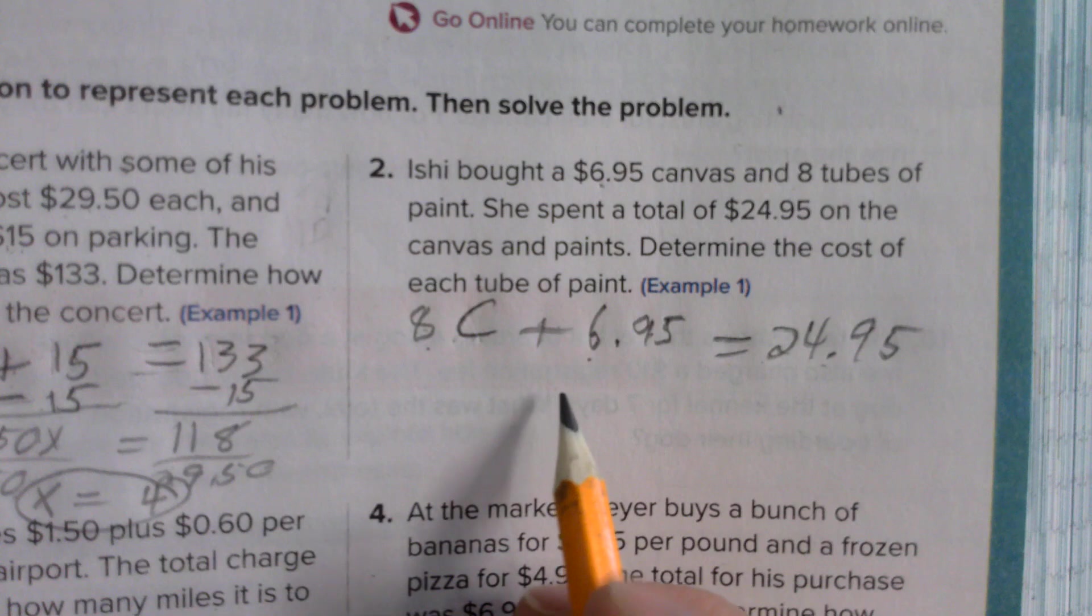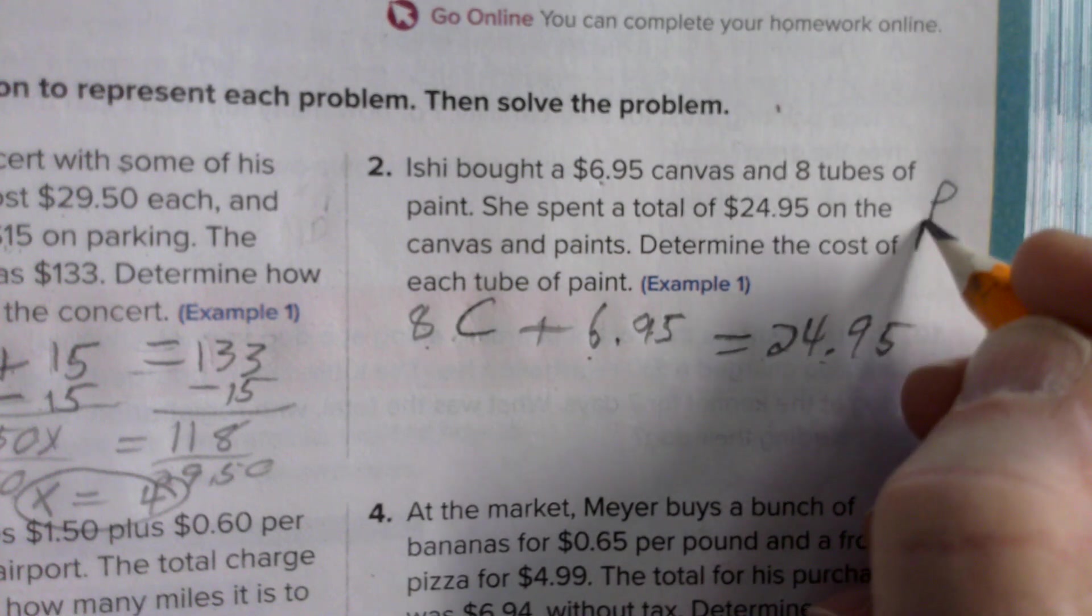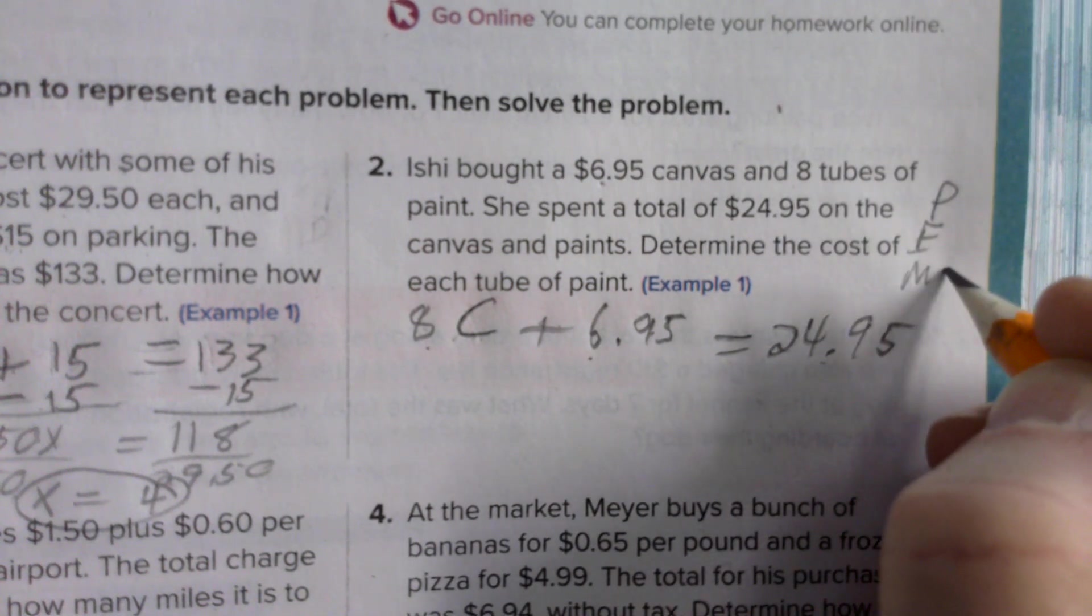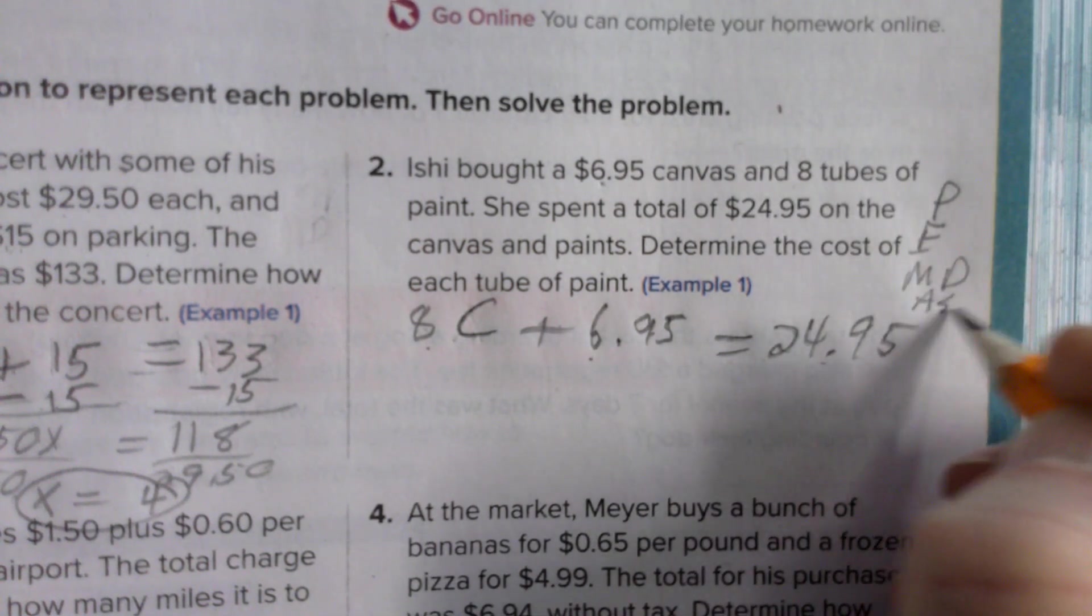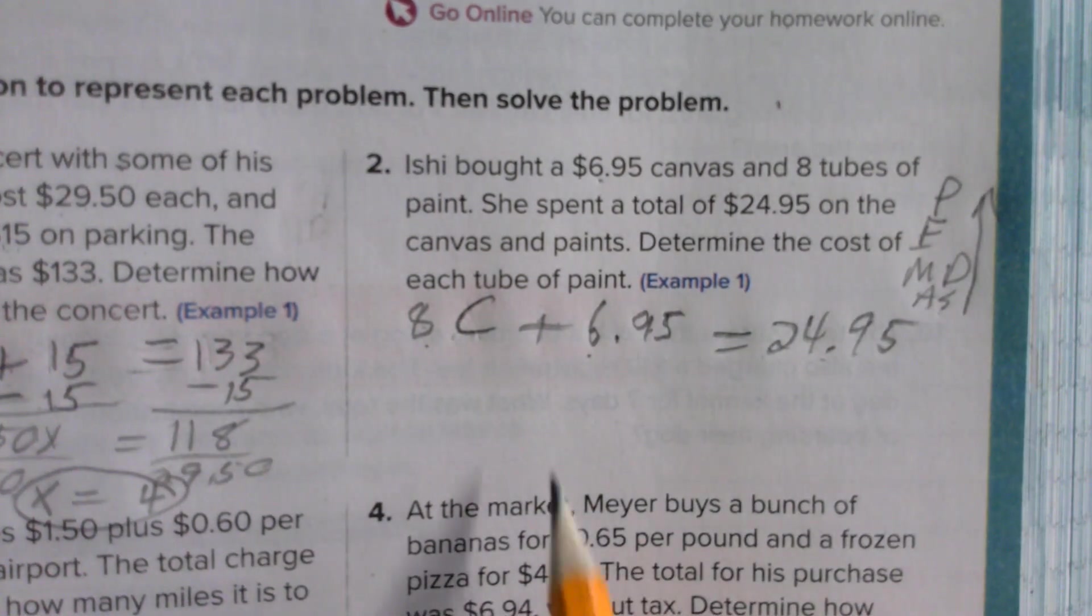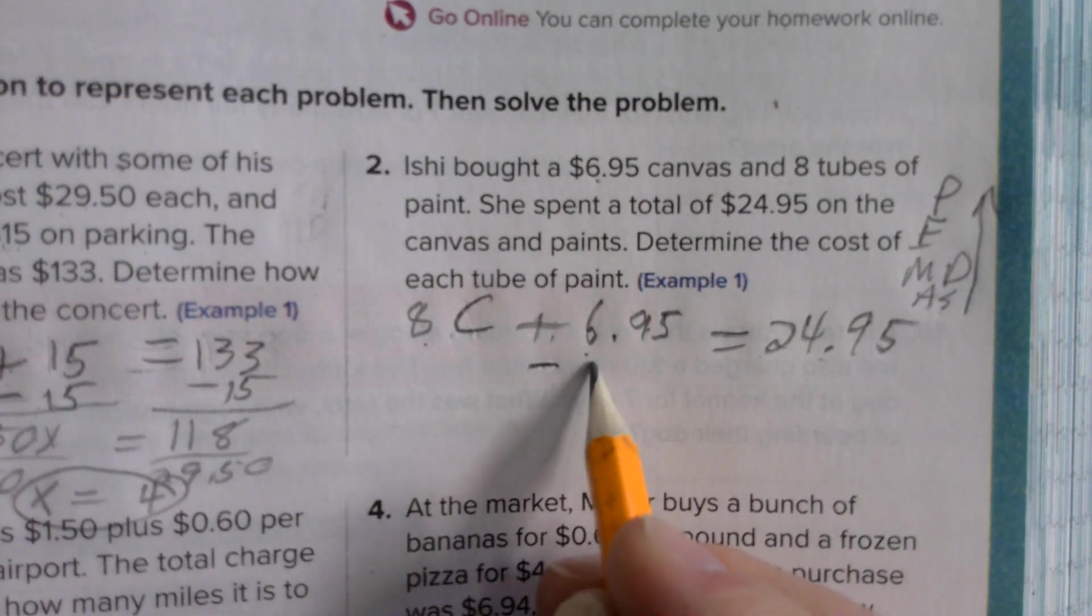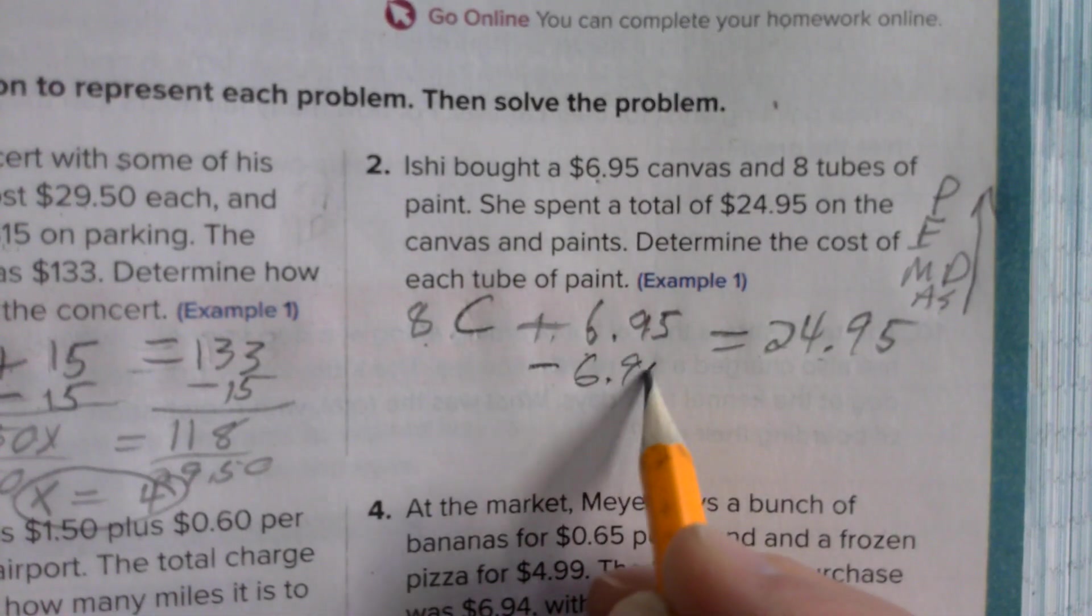We can undo this two-step variable equation by undoing PEMDAS in reverse again. If I undo it backwards, I undo addition and subtraction before multiplication and division. So if I undo addition first by doing subtraction, which is the opposite operation.